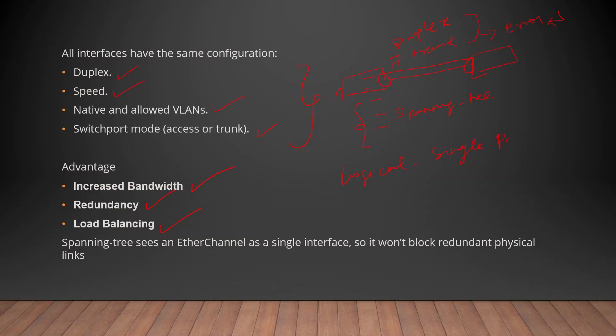We configure a single logical port. If Spanning Tree runs on the logical interface, it will be accounted for as a single port — a single logical interface. Spanning Tree will not block individual member ports.